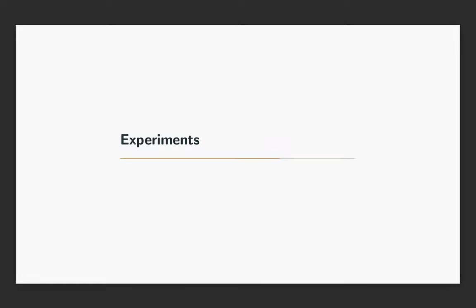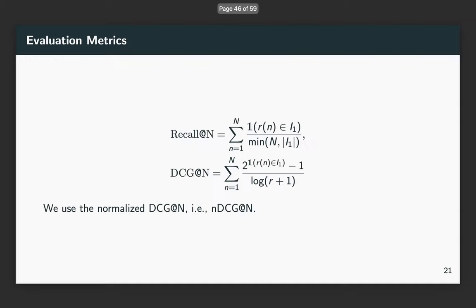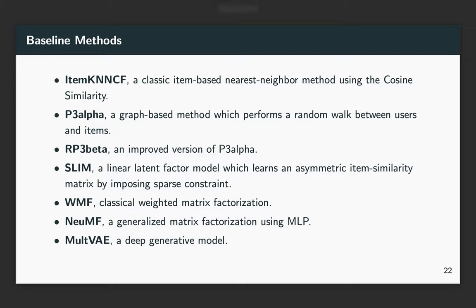Here are some experiments. We use two real-world datasets, ML20M and Netflix datasets. We evaluate different models using Recall@N and NDCG. Here are the baseline methods we compare with. The first five methods are very classical CF models which have proved very effective in a recent survey.